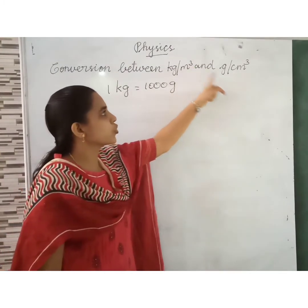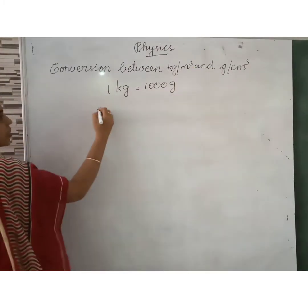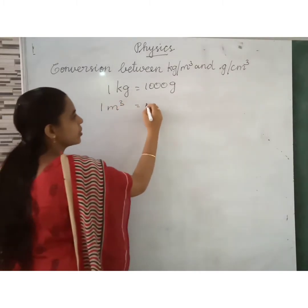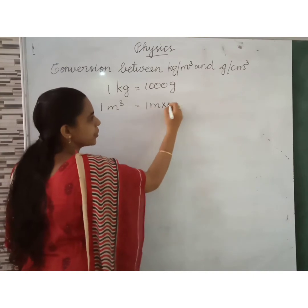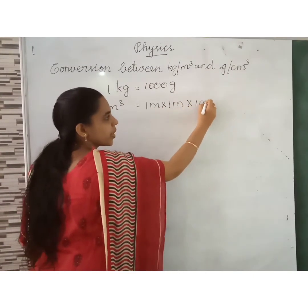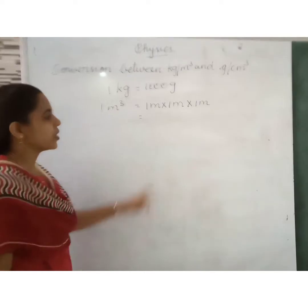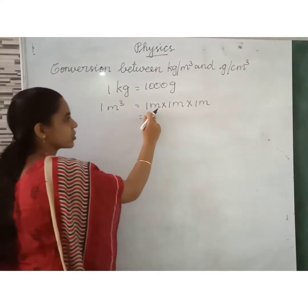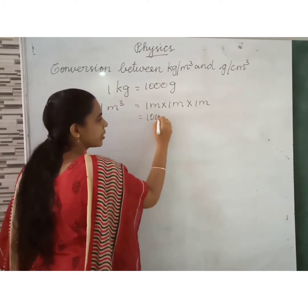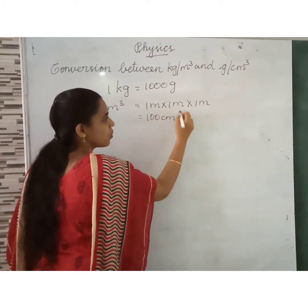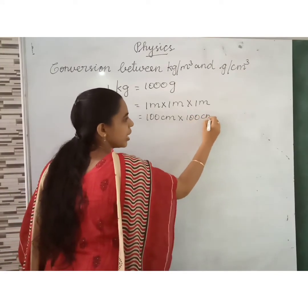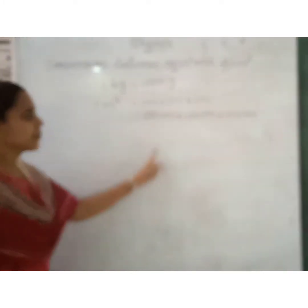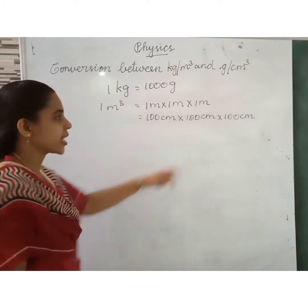Next, we have to change meter cube into centimeter cube. One meter cube is equal to one meter × one meter × one meter. Since one meter equals 100 centimeters, one meter cube equals 100 cm × 100 cm × 100 cm. We have to multiply these three numbers to get the result in centimeter cube.